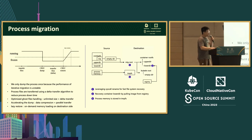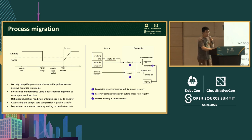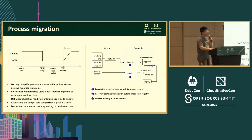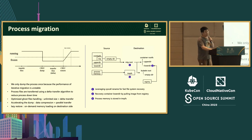This page shows our process migration work. On the left is the state transition of the process during migration. From when live migration is triggered, we first transfer the files used by the process — during this transfer the process is still running normally. After the CRIU dump operation begins, the process enters a frozen state. The dump captures register states, memory, etc. During the dump we also do an incremental file transfer to ensure both sides have consistent file state. The process remains frozen until CRIU Restore completes. In the restore phase we also use a technique called Lazy Restore, which allows the process to start up quickly and load memory on-demand.